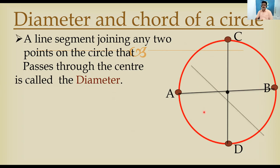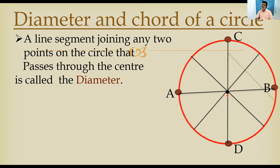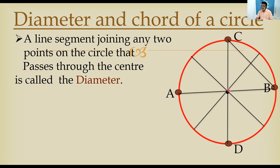All these lines passing through the center are called diameters. Now I am giving one more line — a line joining B and C — but it is not passing through the center. A line joining any two points on the circle but not passing through the center is an important case.